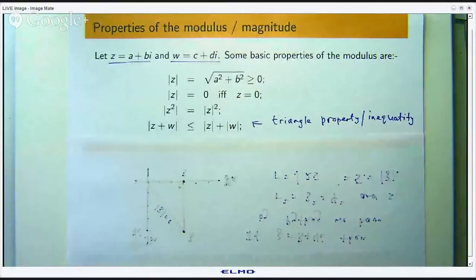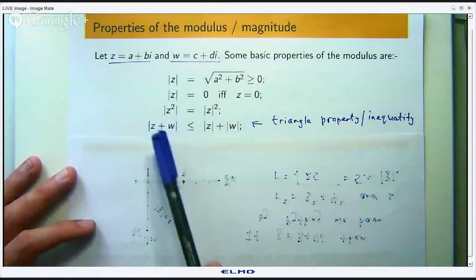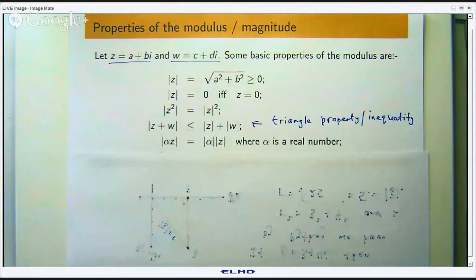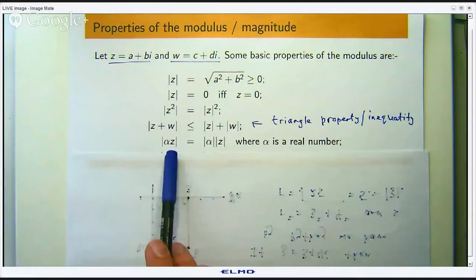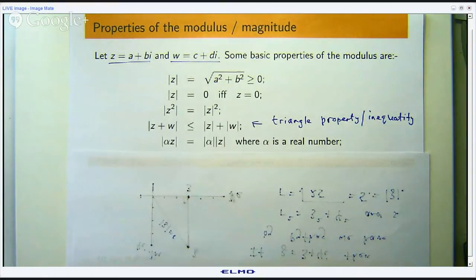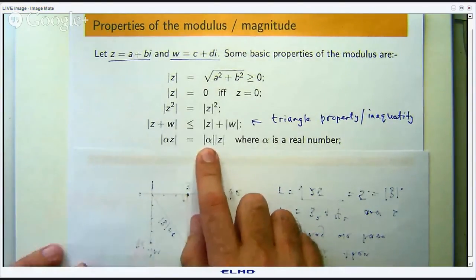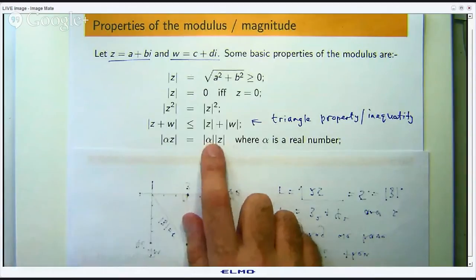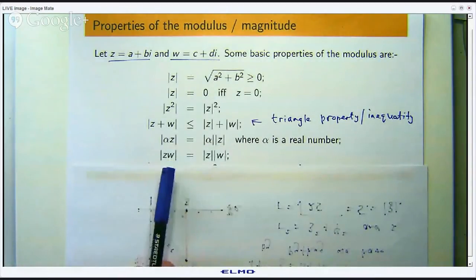If you have a real number alpha and you multiply through and then take the modulus, it is the same as taking the modulus first and then multiplying — where the parallel lines here represent the absolute value of the real number alpha. Sometimes it is pretty clear whether we are talking about absolute value or modulus just from context. The modulus of a product of two complex numbers is the same as the product of the moduli.